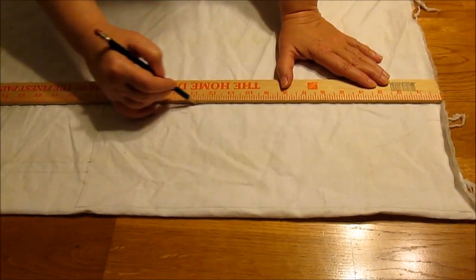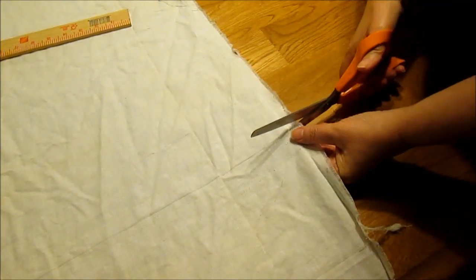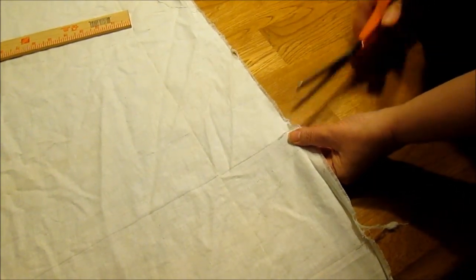I'm going to draw my rectangular shapes directly onto the fabric. Then I will cut and just rip, and this way I can get a perfectly straight line.